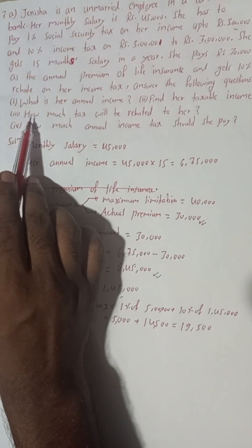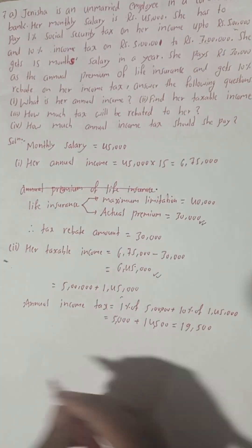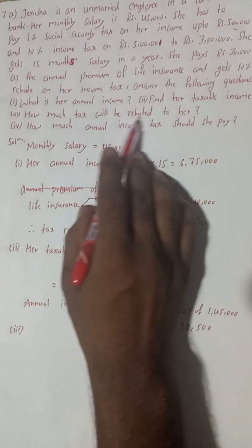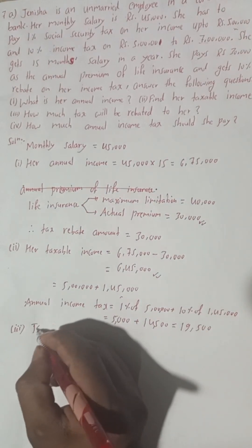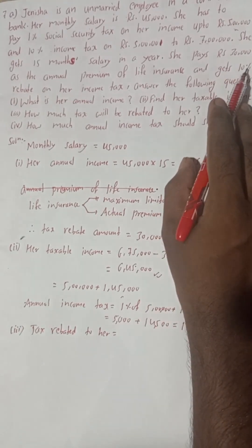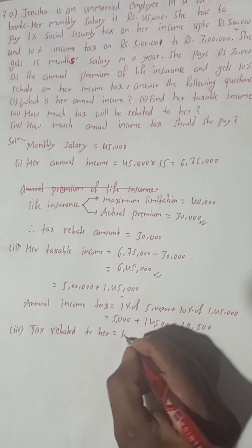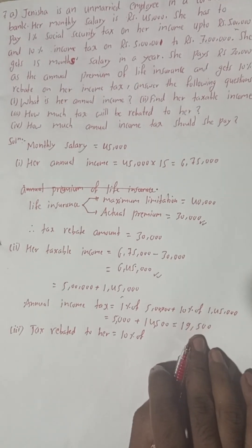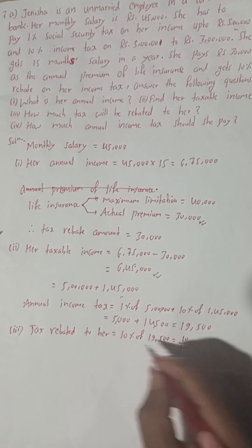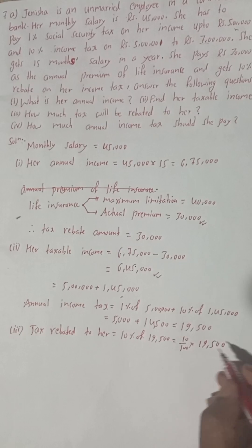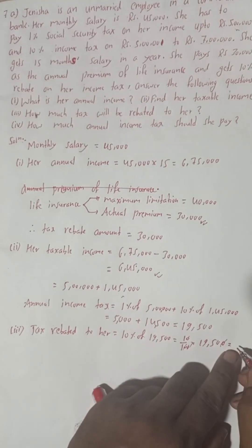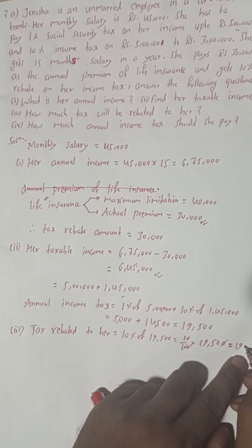Now question 3: how much tax will be rebated to her? Tax rebated equals 10% of the income tax. So 10% of 19,500 equals 1,950. The tax rebated to her is Rs. 1,950.